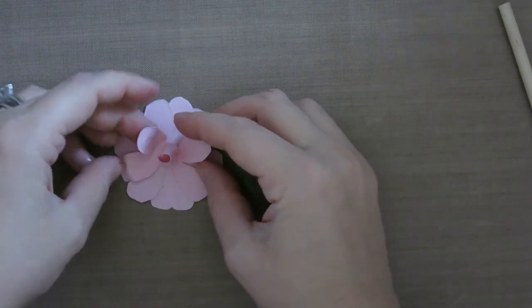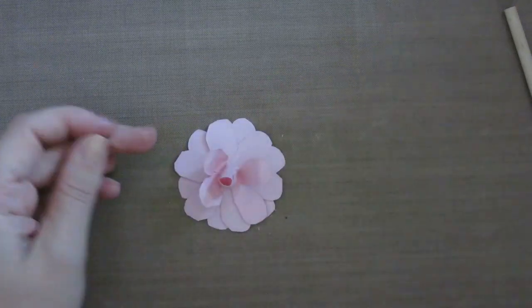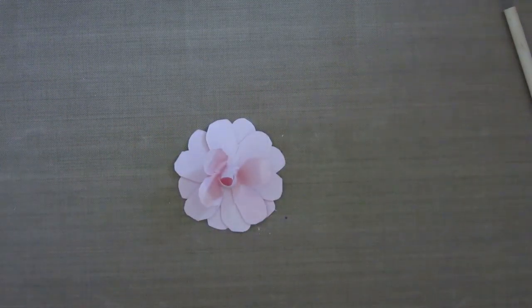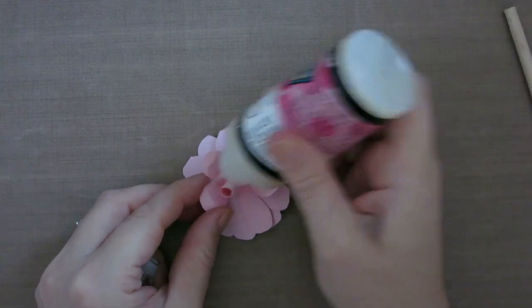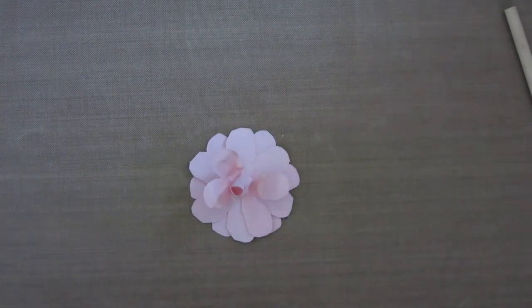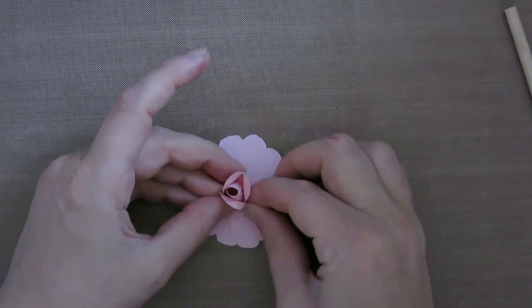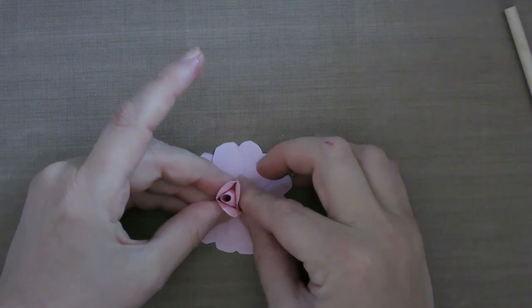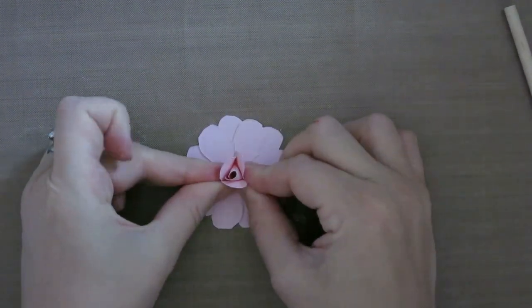And now here's where the sculpture part comes in. You're going to give each petal a little bit of glue and press the petals together so they form a little triangle around that center part.